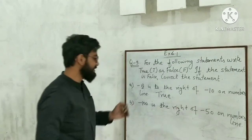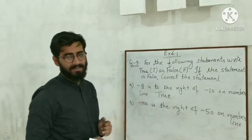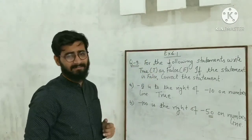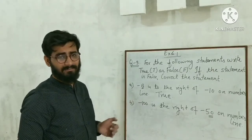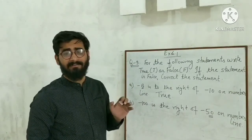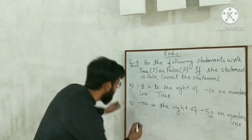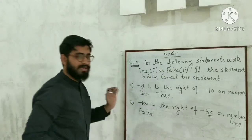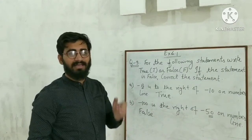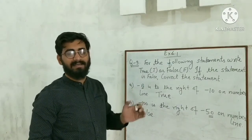Part b: minus 100 is to the right of minus 50 on the number line. Out of minus 100 and minus 50, minus 50 is greater because it has less negative value. So minus 50 will be at the right side, not minus 100. This statement is false. The correct statement is: minus 50 will be on the right side of minus 100 on the number line.